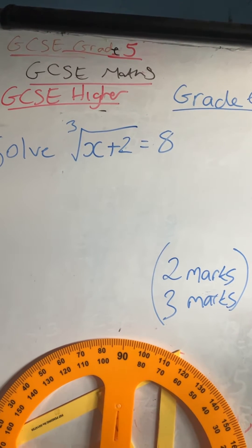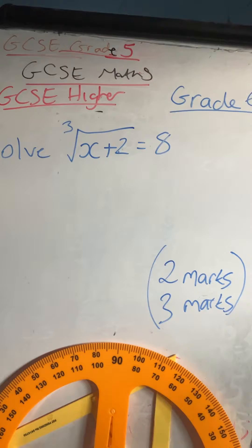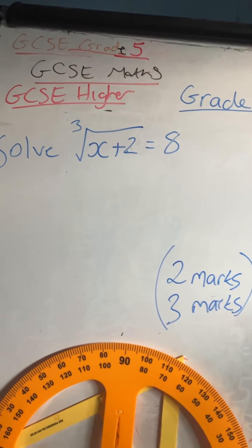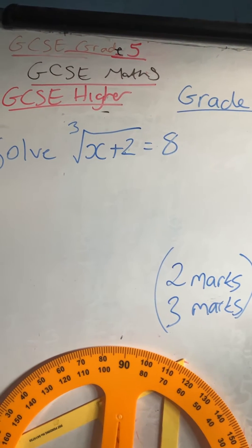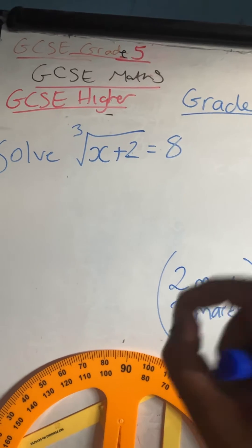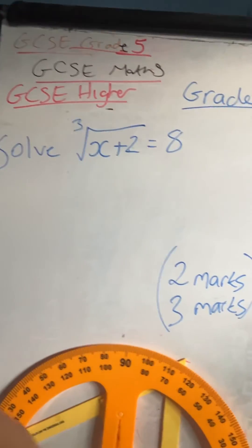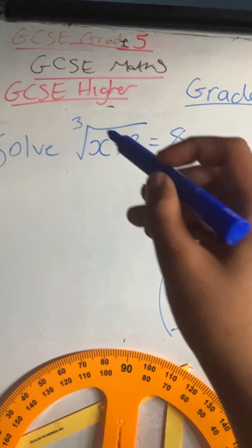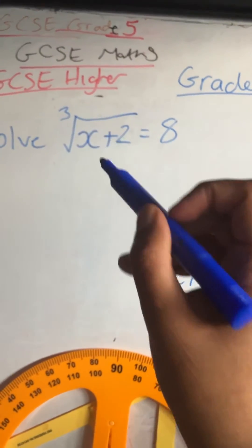GCSE 91 math: solving an equation involving the cube root. We're solving a linear equation involving cube roots. In just 46 seconds, let's go. The opposite of cube root will be to cube both sides.